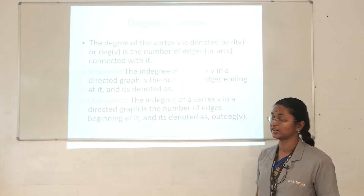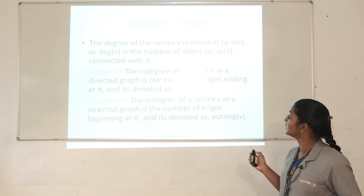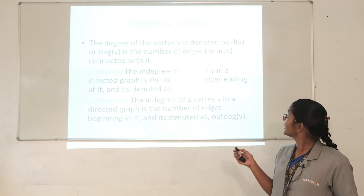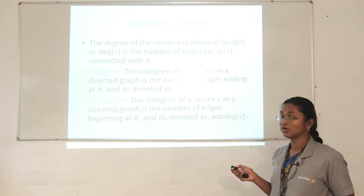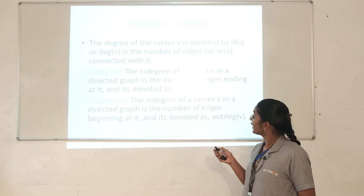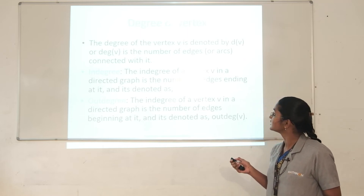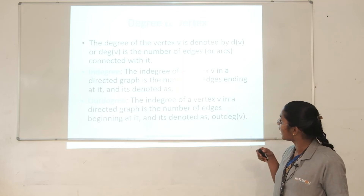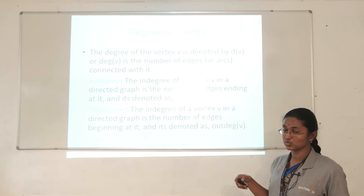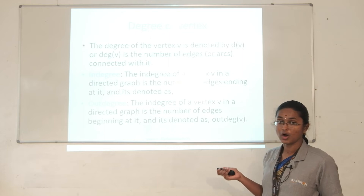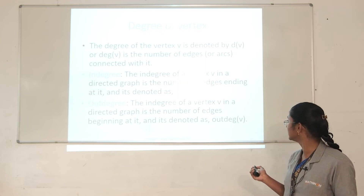The next concept is the degree of a vertex. The degree of a vertex is denoted by D(V), which is the number of edges connecting with the vertex. For a directed graph, the degree is classified into in-degree and out-degree. The in-degree is the number of edges ending at vertex V, and the out-degree is the number of edges beginning at V.